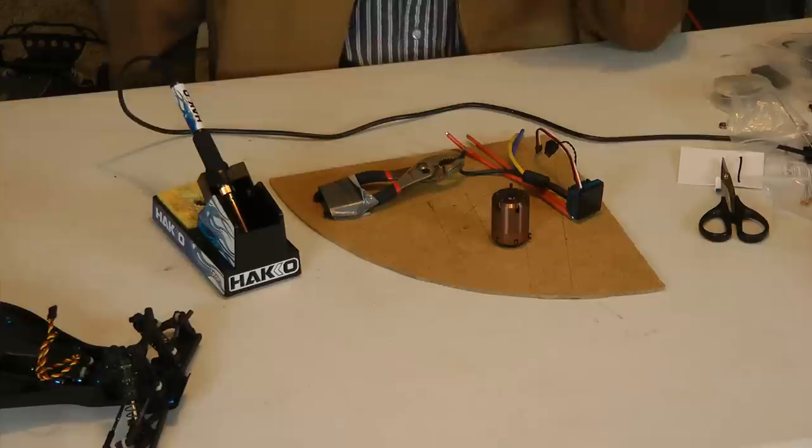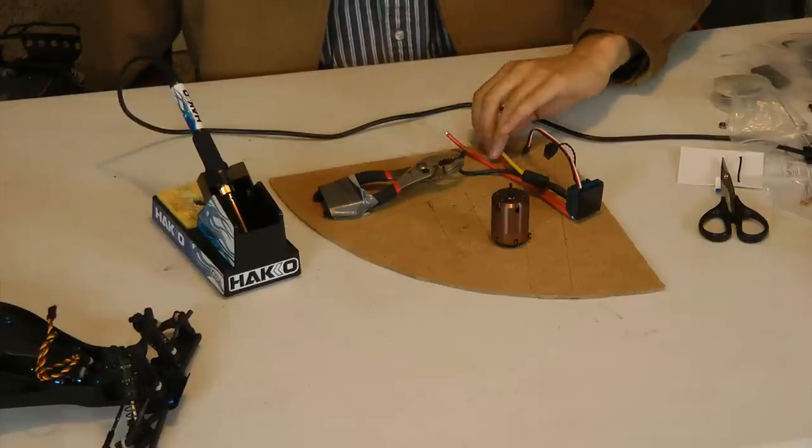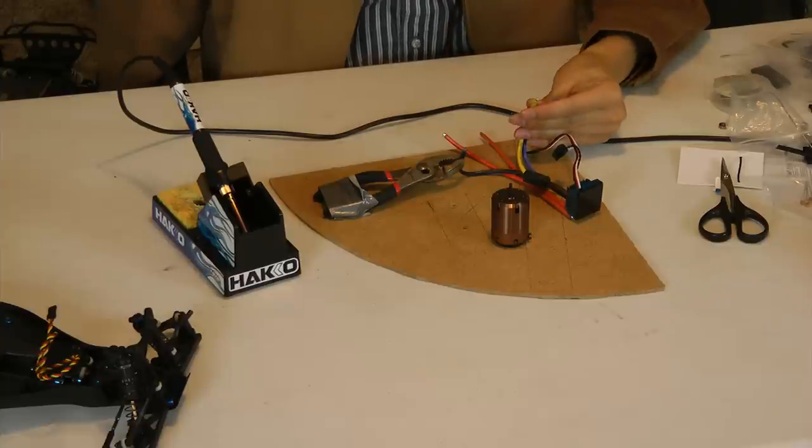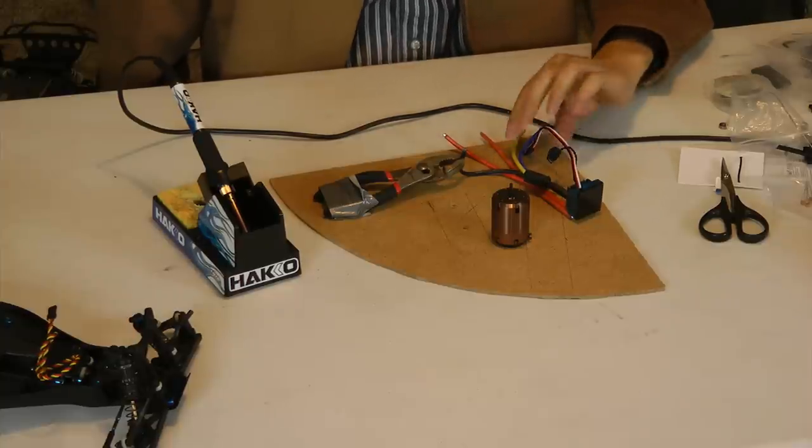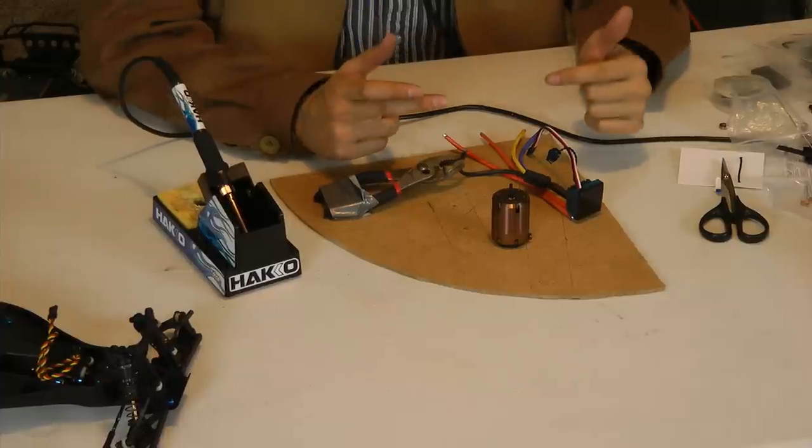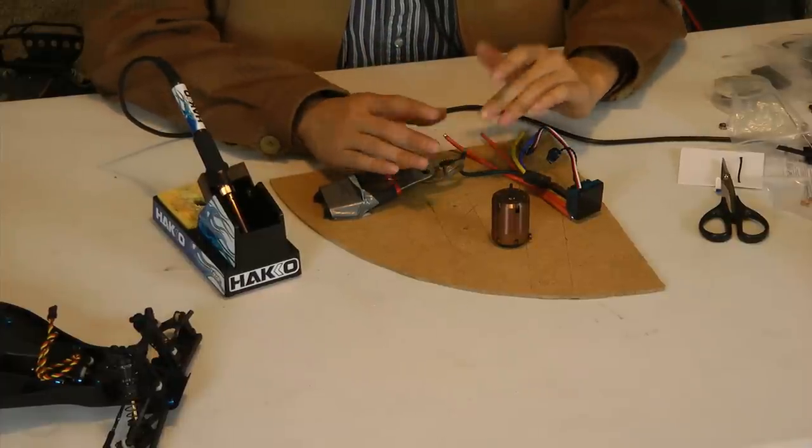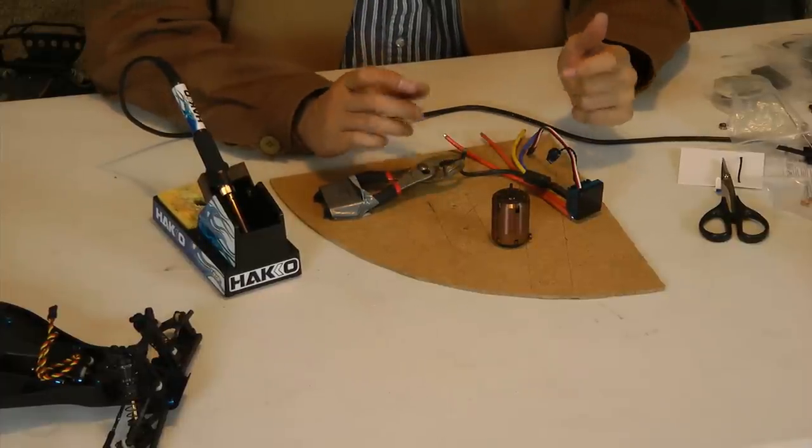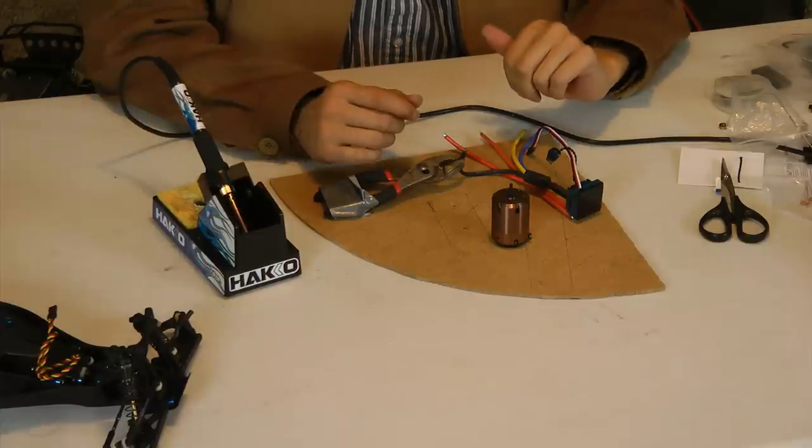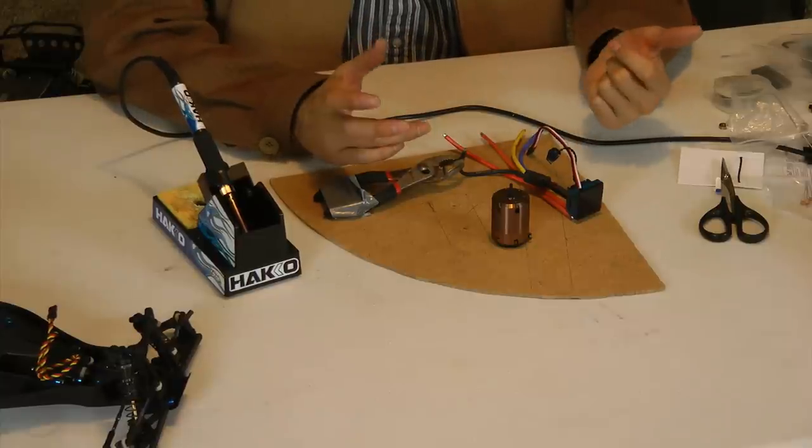So what I've done is I've gone ahead and tinned three of these cables already. But I'm going to go through the same process with the remaining two here. The ESC itself comes with the wires bare. So in order to install these to our connectors and motor we're going to need to tin it.